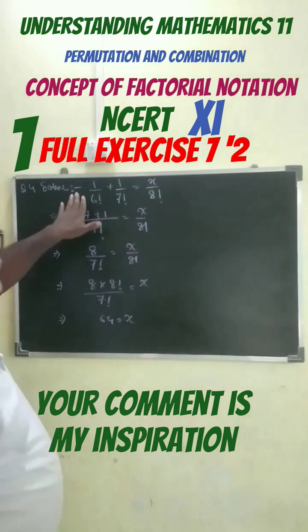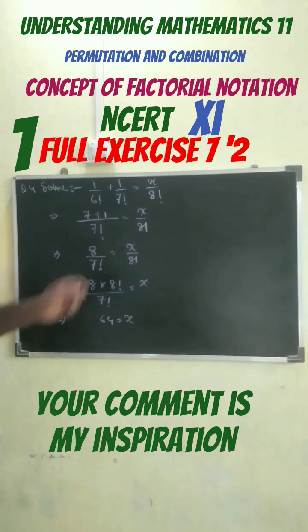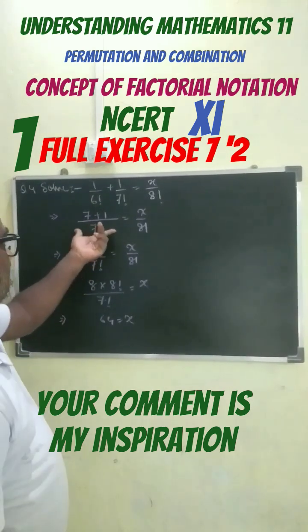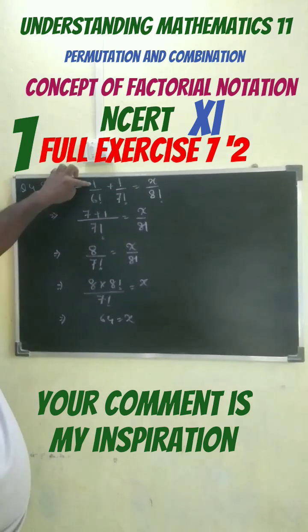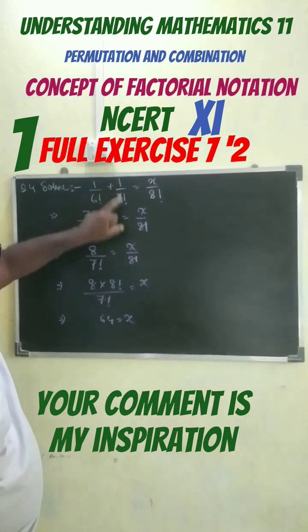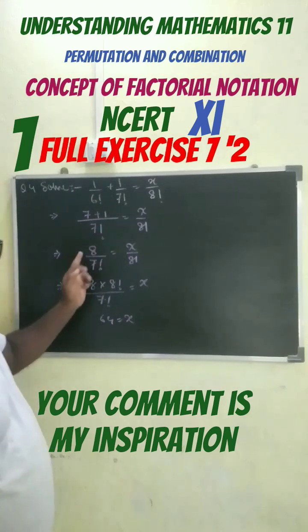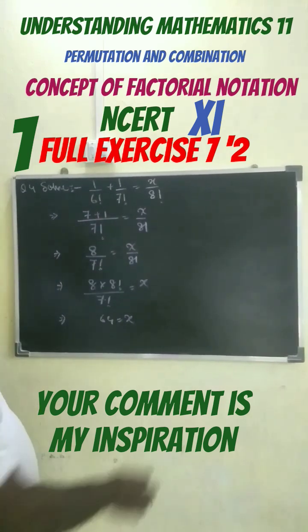Next question: we have 6 factorial over 7 factorial. We have 7 factorial minus 1. In this way, we get 8 divided by 7 factorial equals this. Bringing...